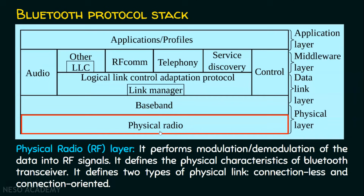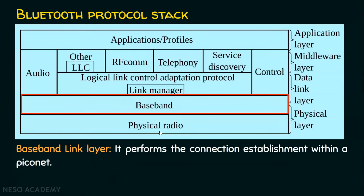Now we will move on to the next layer, which is the baseband layer. This baseband link layer performs connection establishment within a Piconet. The Piconet is the basic network configuration in a Bluetooth network. If one device wants to communicate with another device and a connection has to be established between them, this baseband layer takes care of connection establishment within a Piconet.